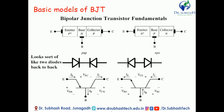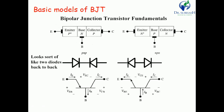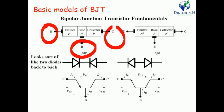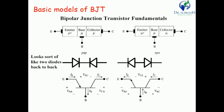We start with the basic model of BJT. We will discuss the basic structure, terminal indication, and terminal names of BJT. Two types of transistors are available: the first type is PNP transistor and the second type is NPN transistor. The three terminals — Emitter, Base, and Collector — are common to both PNP and NPN.